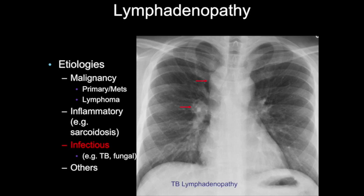There's nothing specific about this appearance that would make you say tuberculosis right away. The key is to recognize that there's lymphadenopathy, it's abnormal, give a differential diagnosis, and then direct clinical management further with either a CT scan or further clinical evaluation.